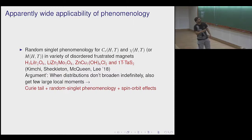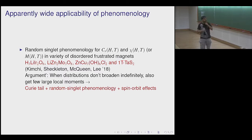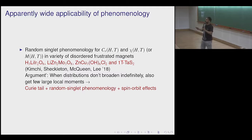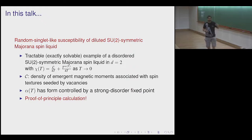Anders Sandvik and collaborators constructed one of these designer Hamiltonians which, when you do the numerics, does look like it gives some kind of random singlet phase. This has been pushed further by taking various frustrated antiferromagnets and fitting data using a random singlet form for the susceptibility and specific heat — adding spin-orbit effects and a small Curie tail to explain the data in a fairly unified way.